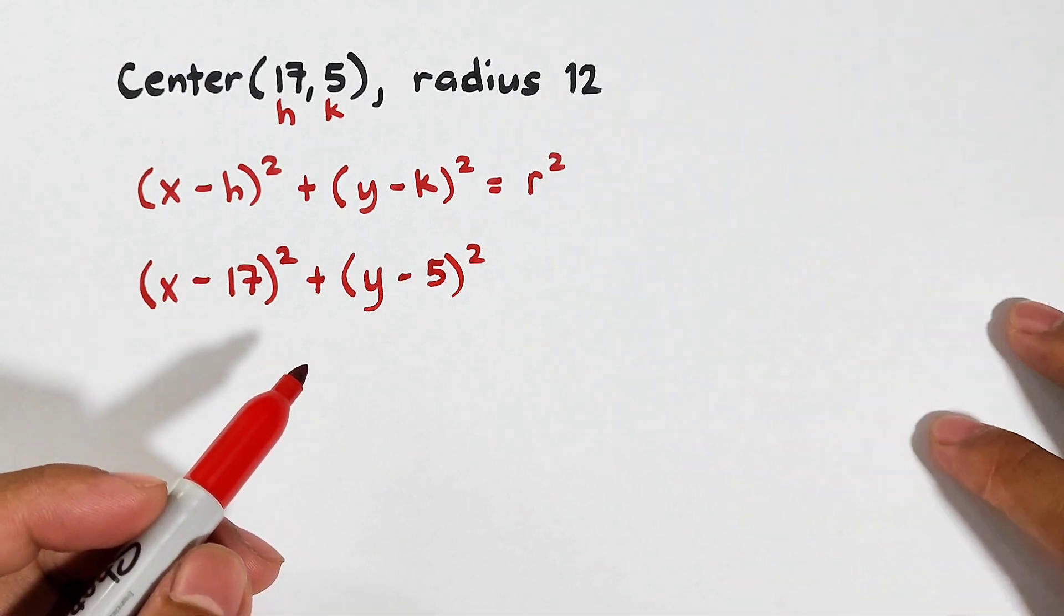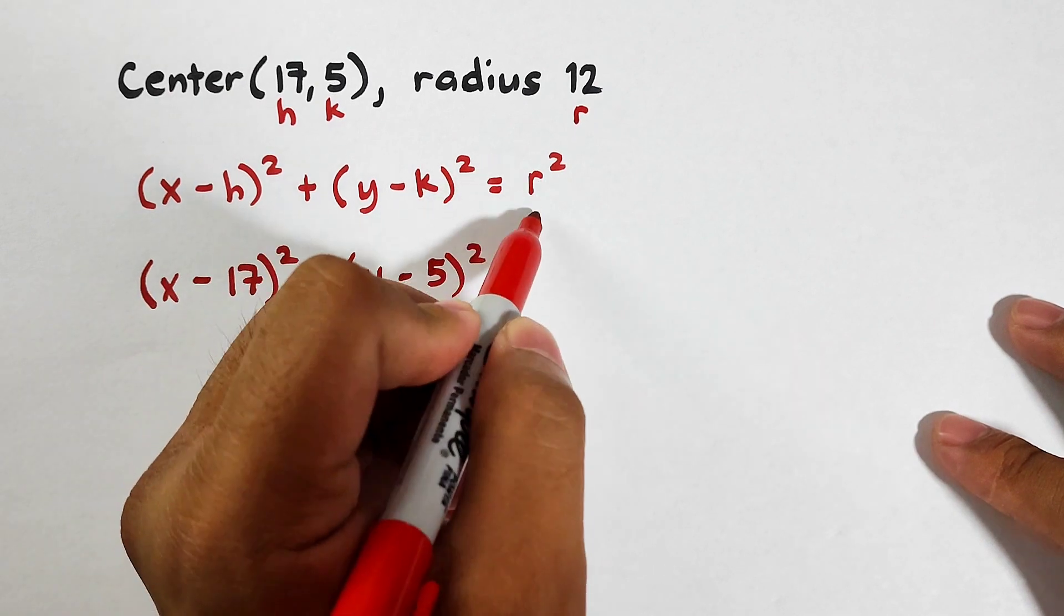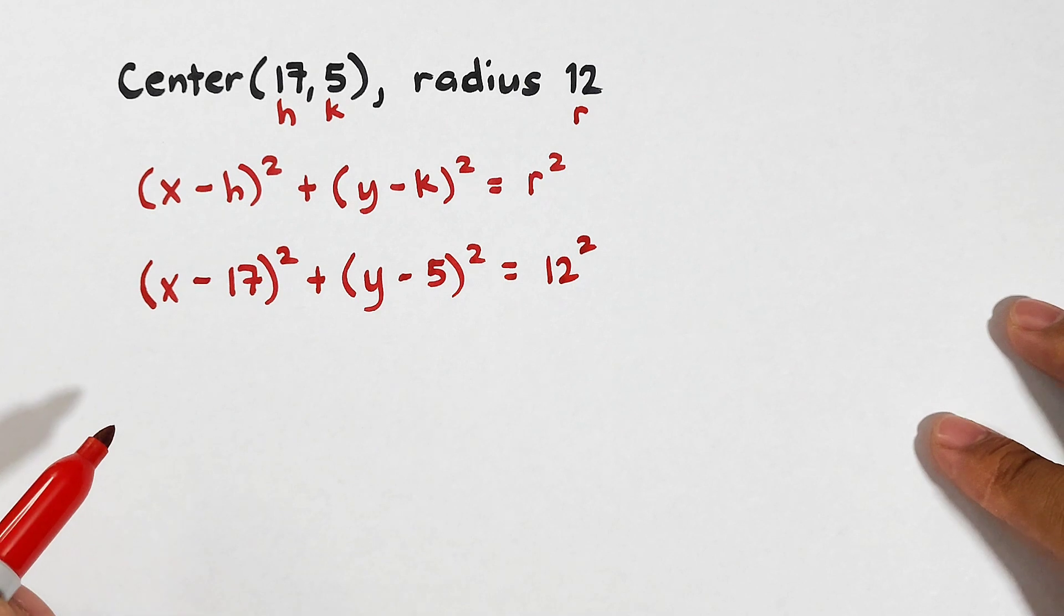Now, what about your radius? This is your r. You will plug it in here. r is 12. So this is 12 raised to the second power.